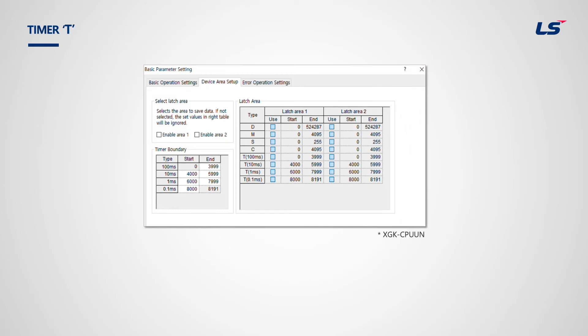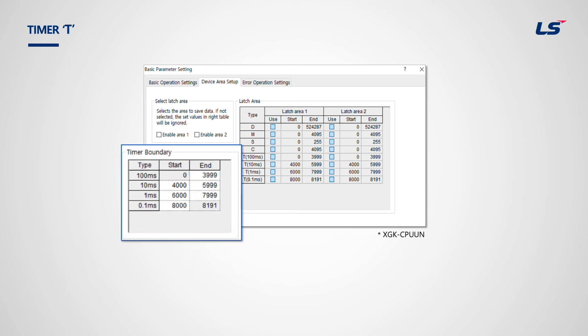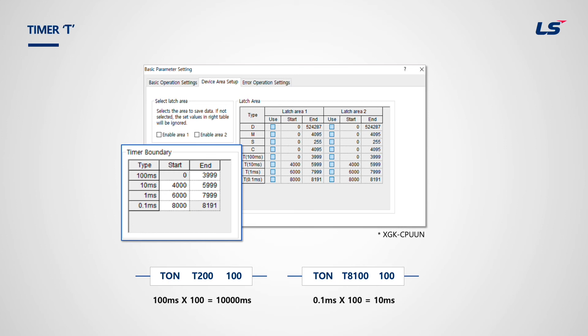This is the timer. In basic parameter settings, the second tab, device area setup, has timer boundary on the lower left. 100 milliseconds contains numbers from 0 to 3999, meaning device addresses T0 to T3999 have a timer value of 100 milliseconds. For example, timer address T200 lies between T0 and T3999, so its timer value is 100 milliseconds, meaning a set value of 10 equals 1 second.